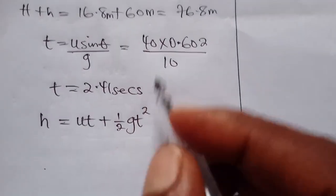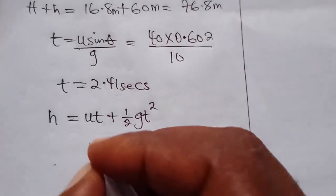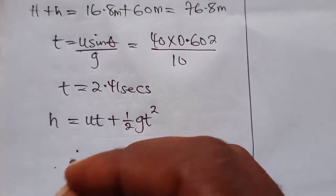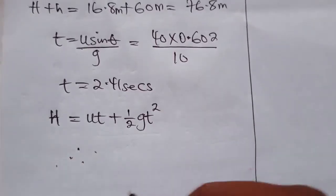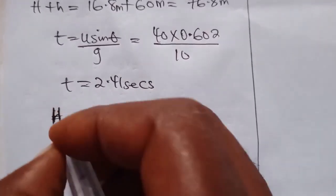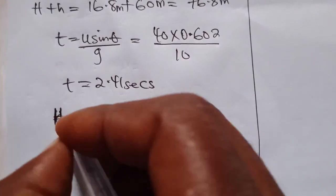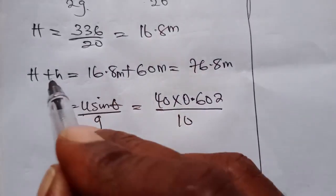Now remember that when this ball gets to the ground, it doesn't have any velocity, so our u is zero. If u is zero, then for our total height H_total, which is 76.8 meters, the ut term becomes zero. Zero times anything is zero.